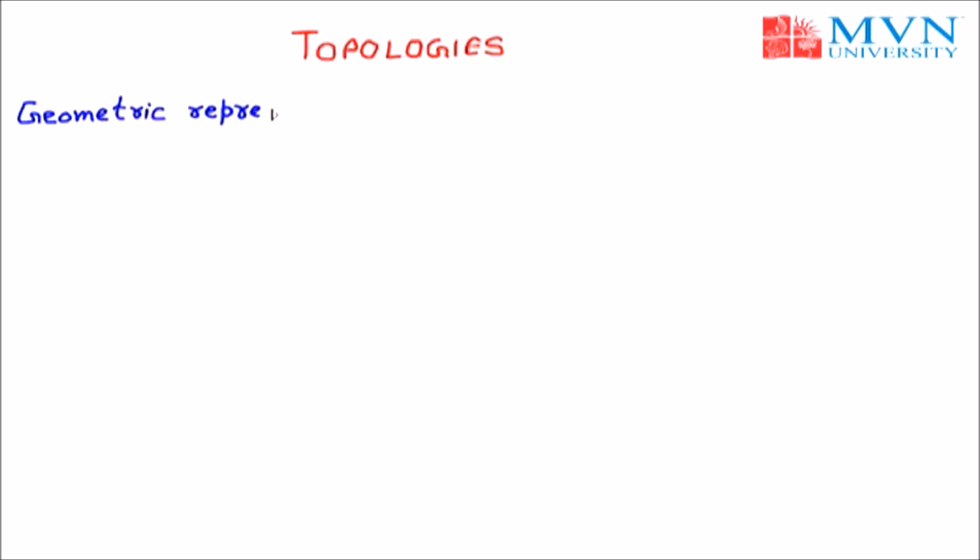We will discuss our next topic: topologies. Topology is the geometric representation of all links and network devices. Basically, topology is the layout by which we can define any network device. We have various topologies in the market, for example bus topology, ring topology, and hybrid topology.